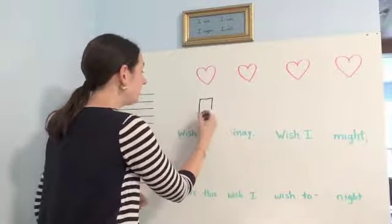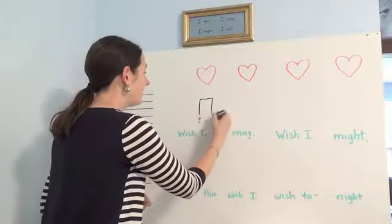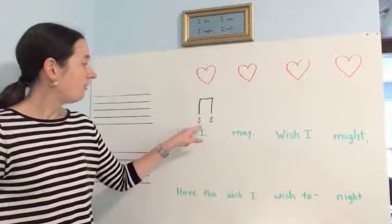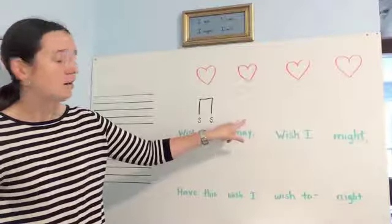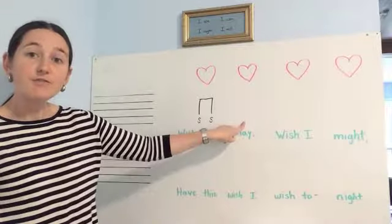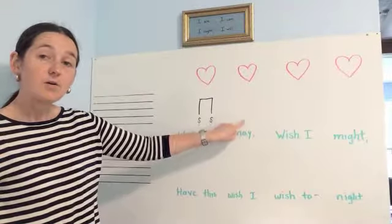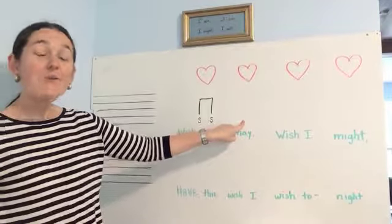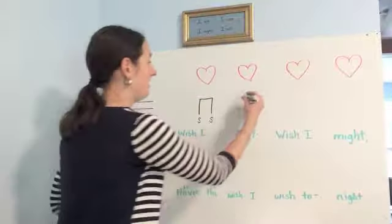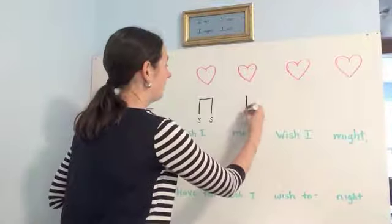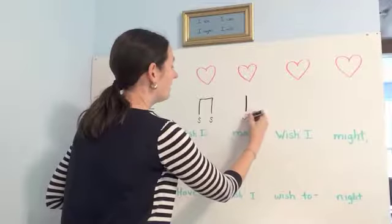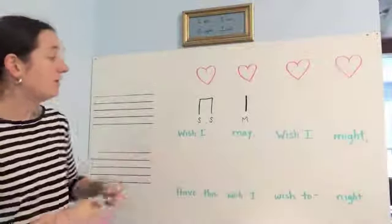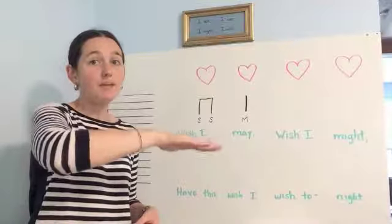We have our titi here. I'm just going to write an S and an S, and that tells us this is so-so. And then for this beat here, what do we have? Me. And that's a ta. We have a ta that is a me. So there we go — we're going to write an M for me. So we have "wish I may."